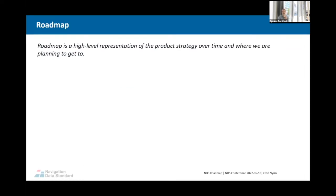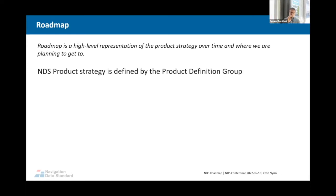So what is the roadmap? Why are we talking about a roadmap? The roadmap is the high-level representation of the product strategy over time and where we are planning to go. Without a roadmap, we can do development on our own, but without a plan, we don't know where we would like to go. That's why it's important to have a product strategy and how we elaborate it over time. The product strategy is required to realize the NDS vision that was presented by Martin.